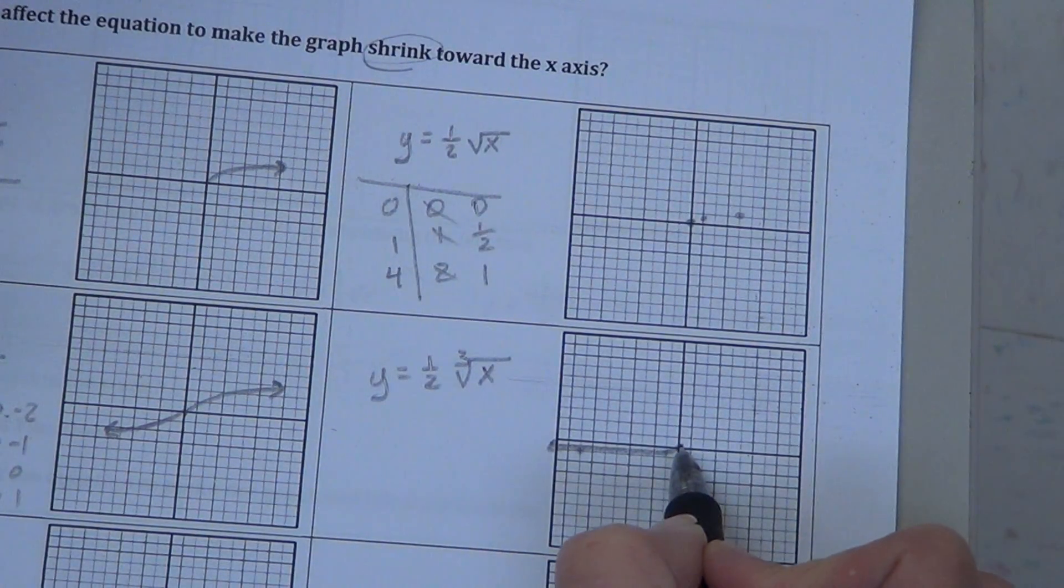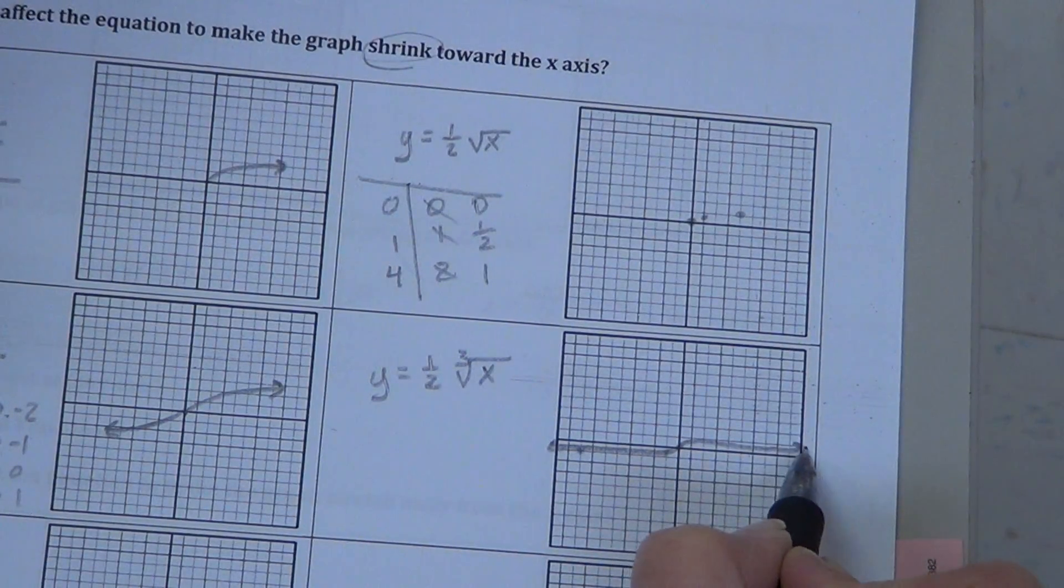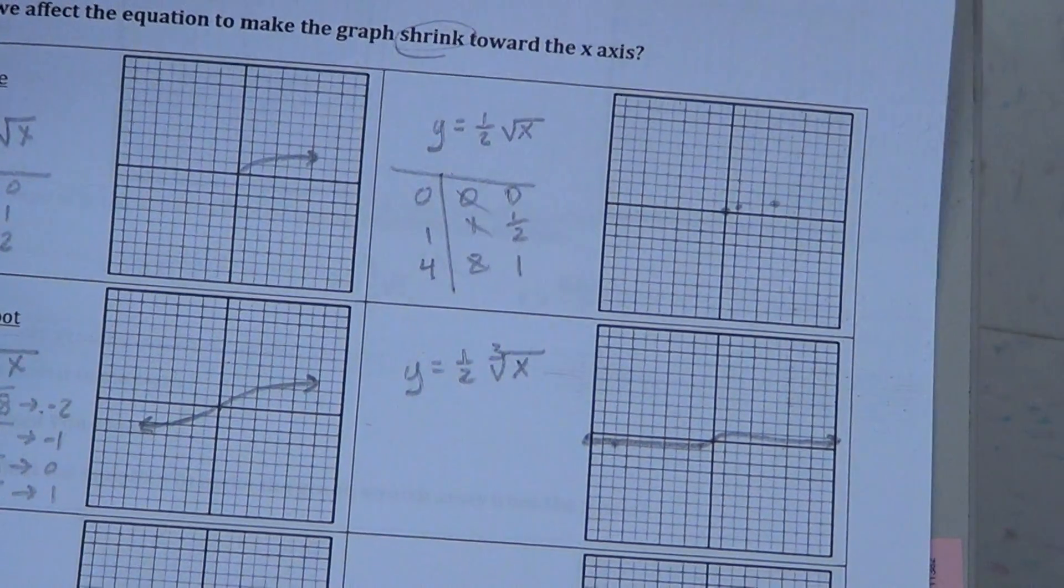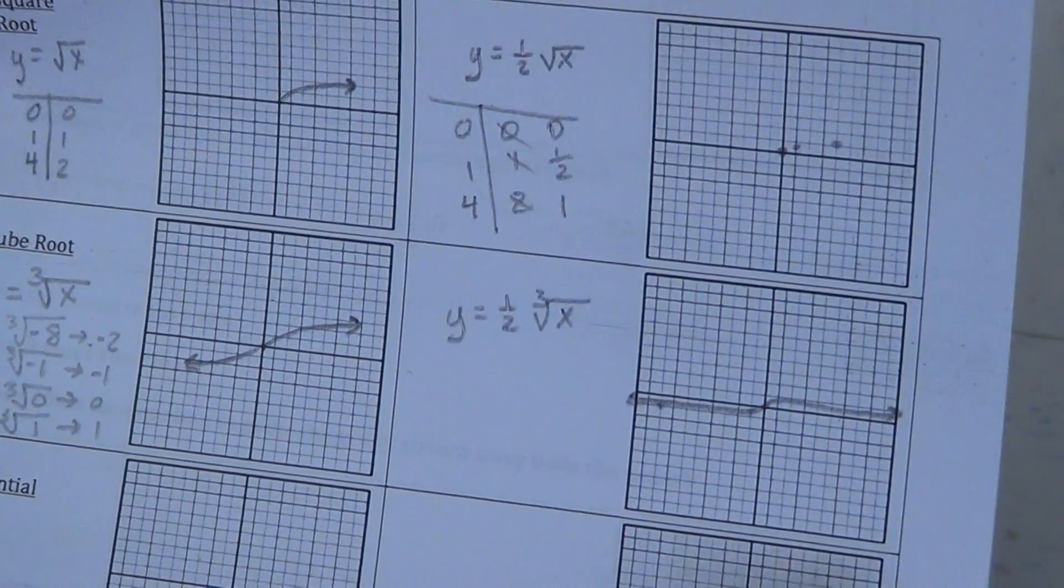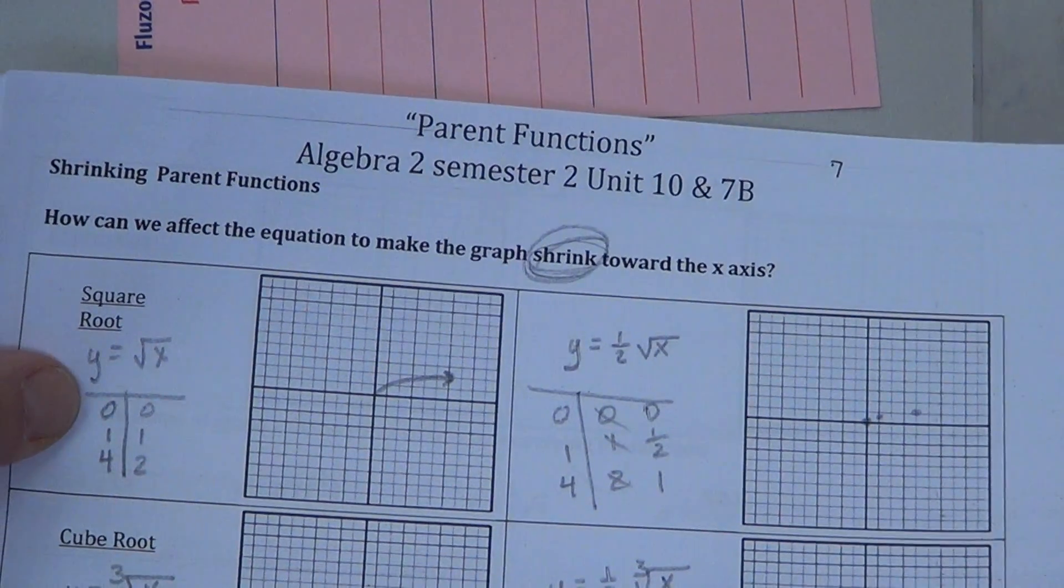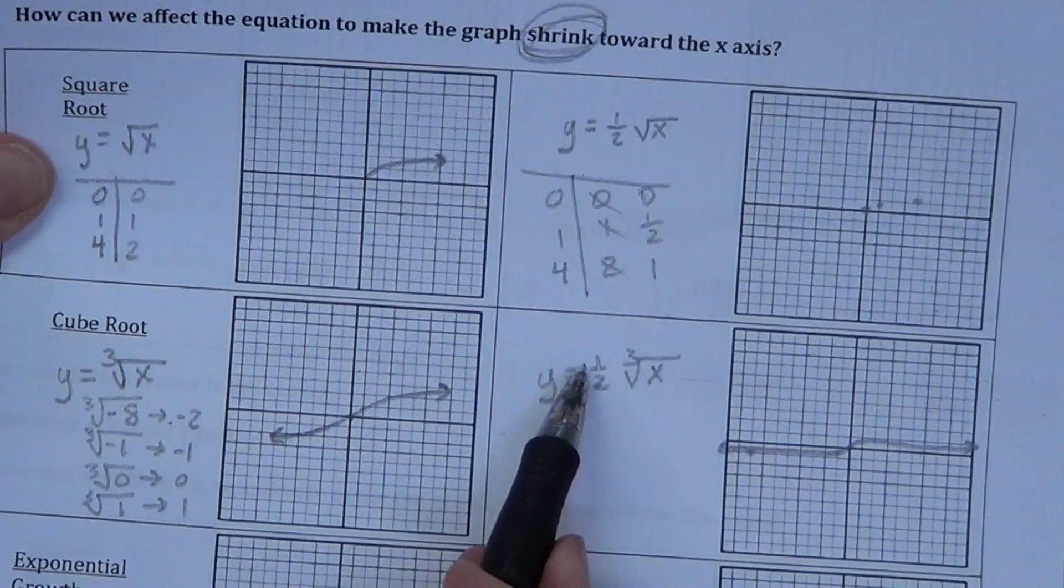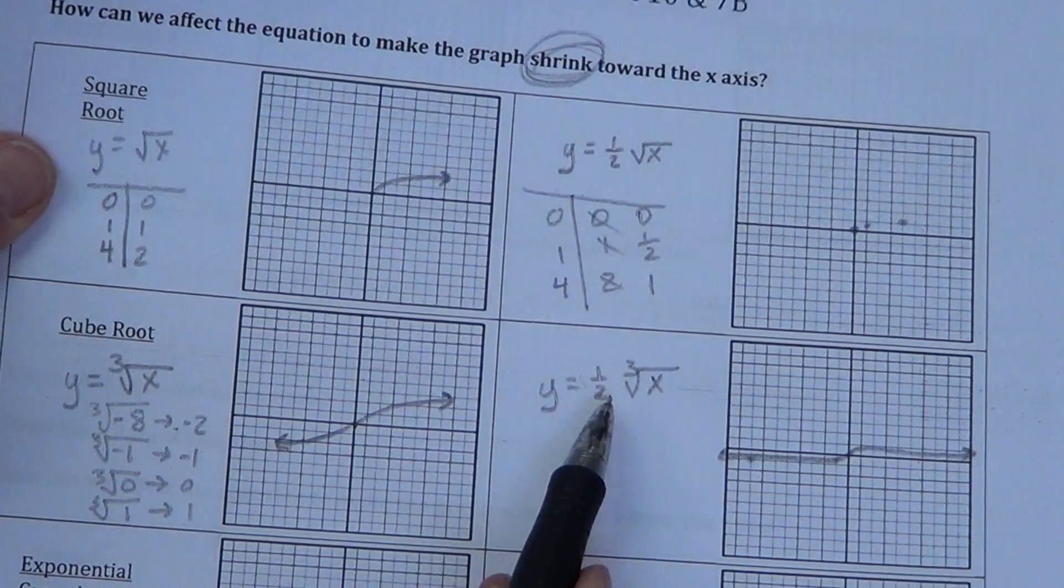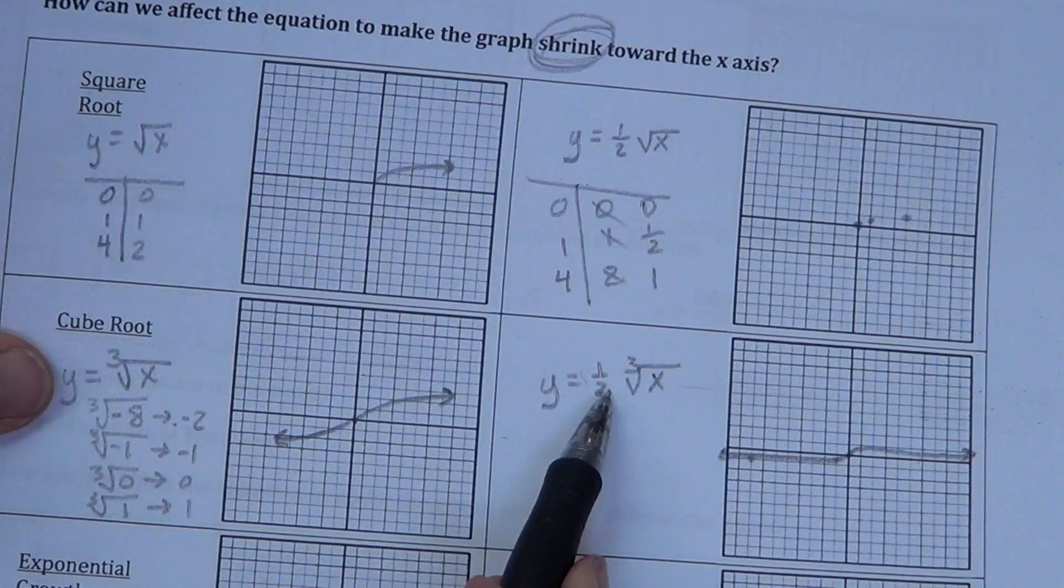So we see that our s now has gotten very, very skinny or squished down. We say that it shrinks when we do this. Any time we multiply by a fraction that is less than 1, absolute value less than 1, it's going to draw it into the x-axis.